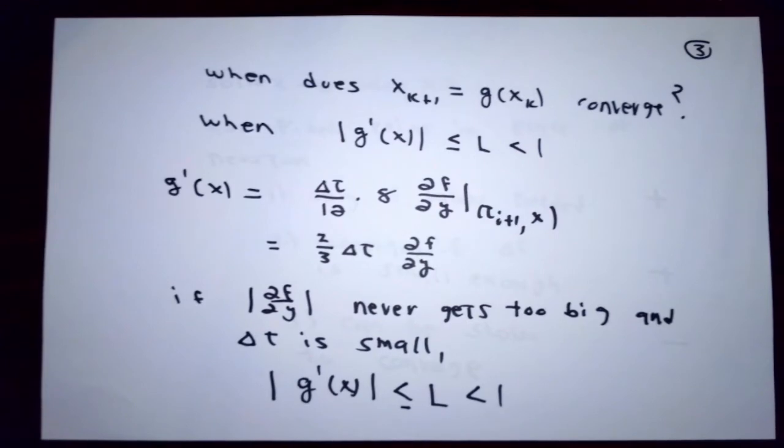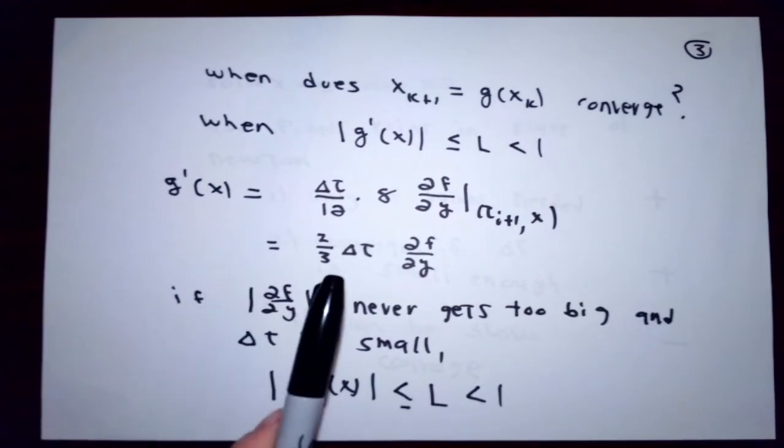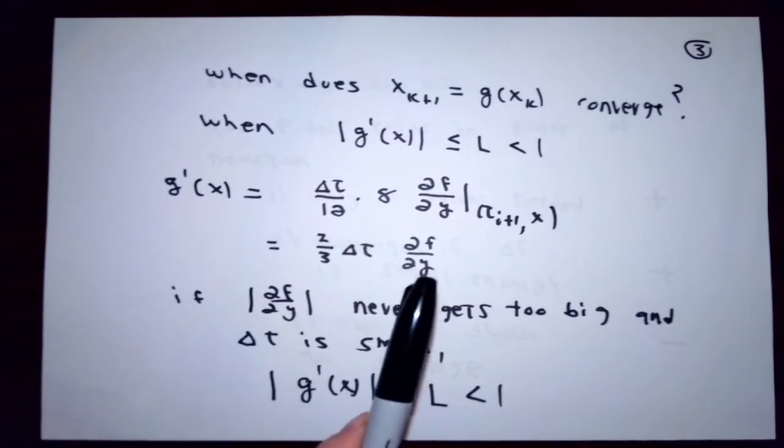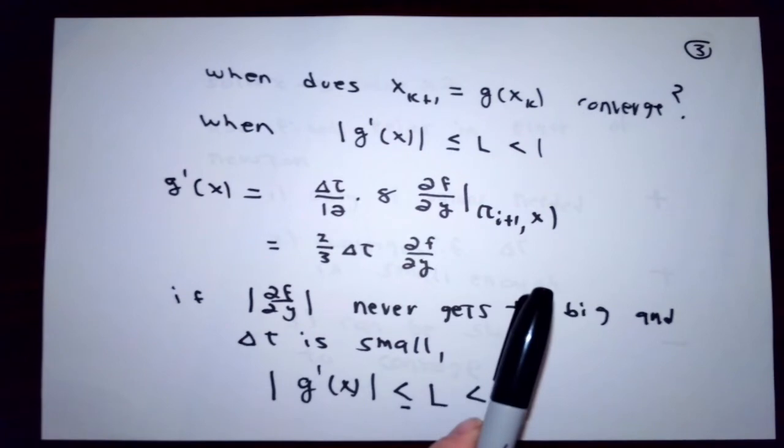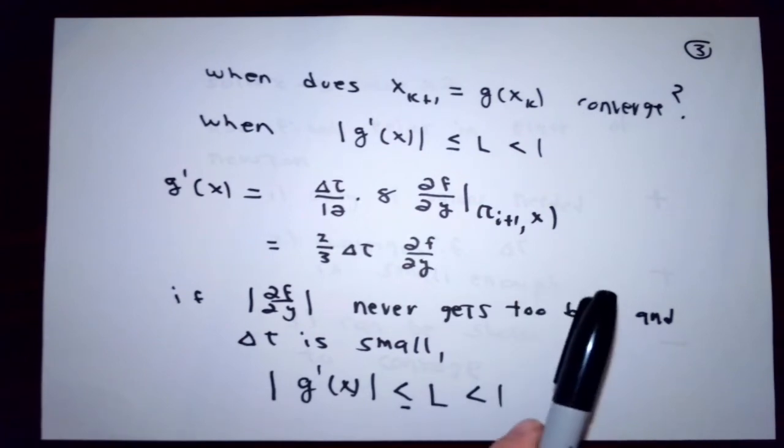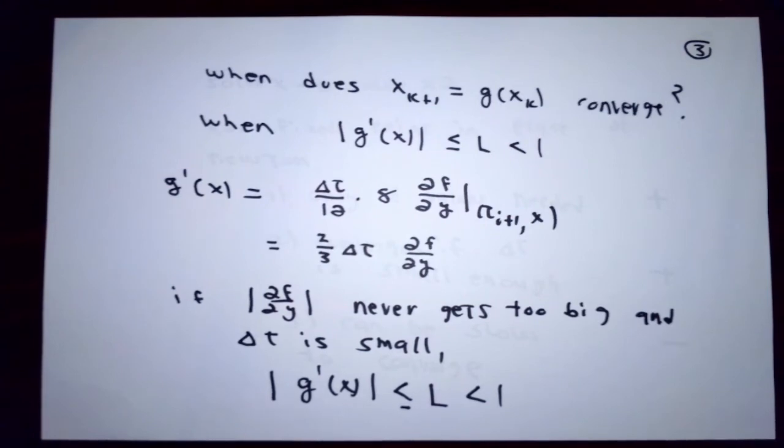As you'll recall from the discussion of fixed point iteration, things are going to go our way if the absolute value of the derivative of the g function is small, bounded away from 1. If you look at the g function in the way that we're thinking right now, then g prime at x is going to be Δt/12 times 8 times the partial derivative of f with respect to y evaluated at t equals t_{i+1} and y equal x.